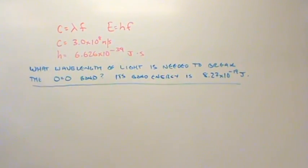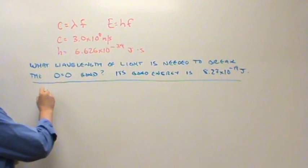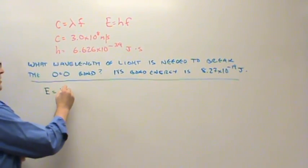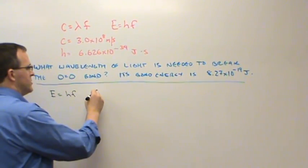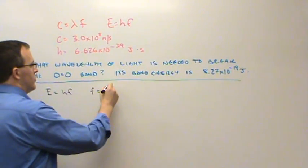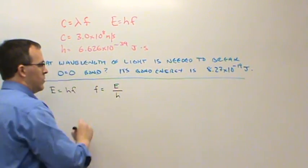So let's do that first calculation. The first calculation relates energy and frequency, so E equals hf. Therefore, frequency, which we want to know, is equal to E divided by Planck's constant, h.